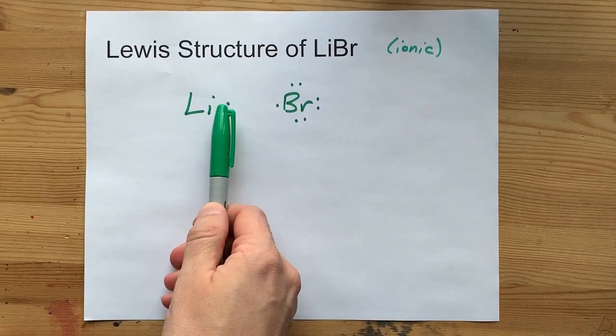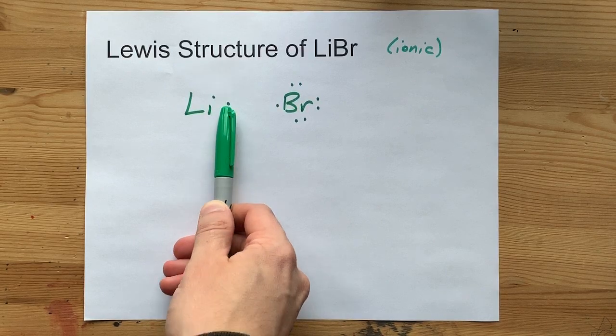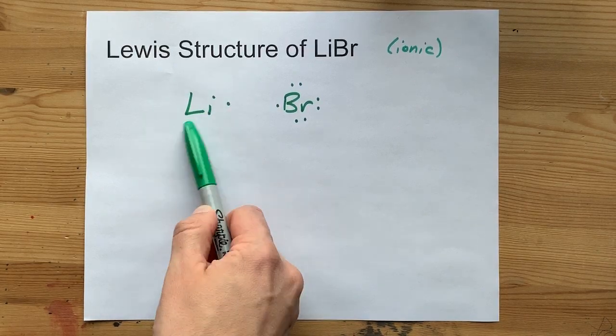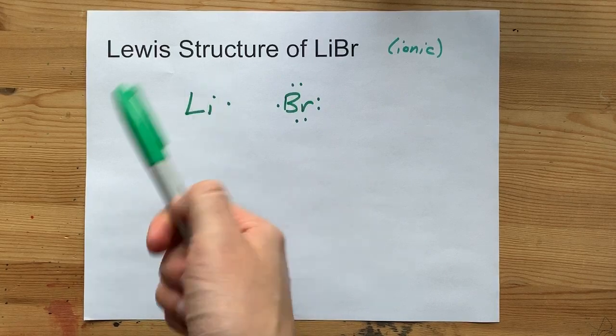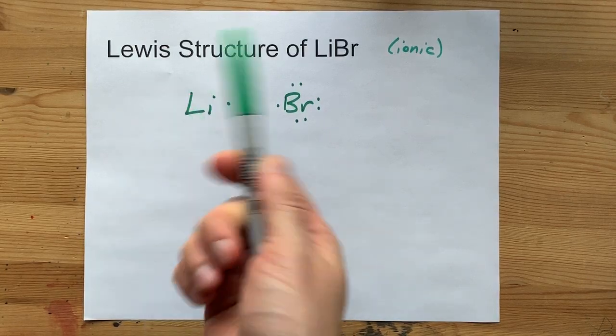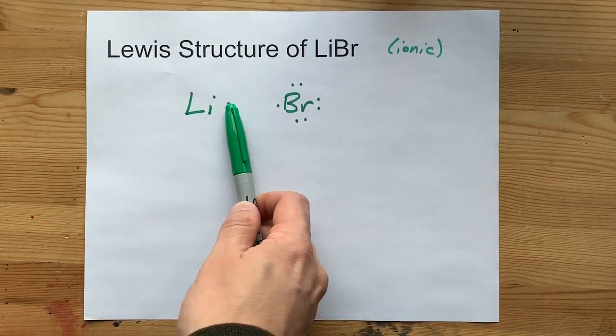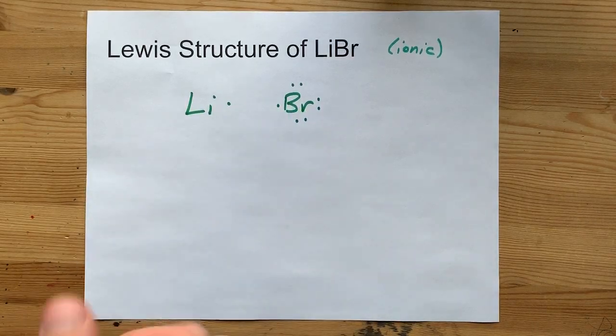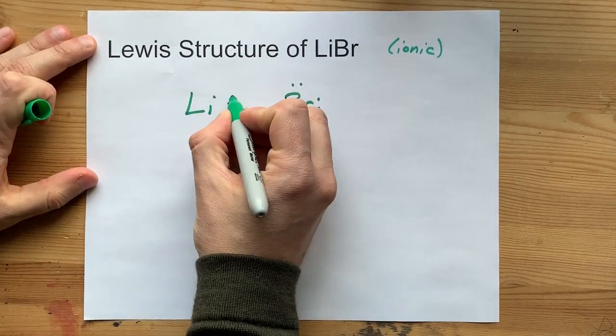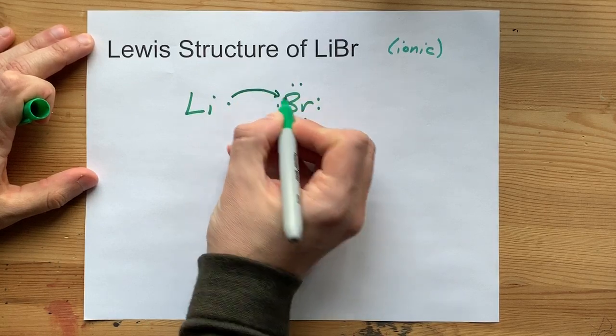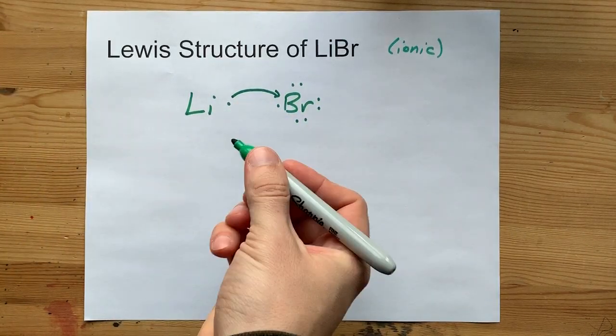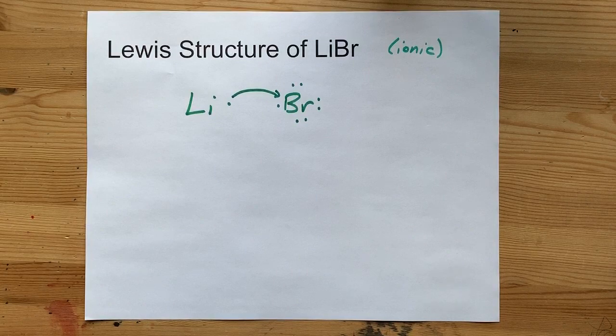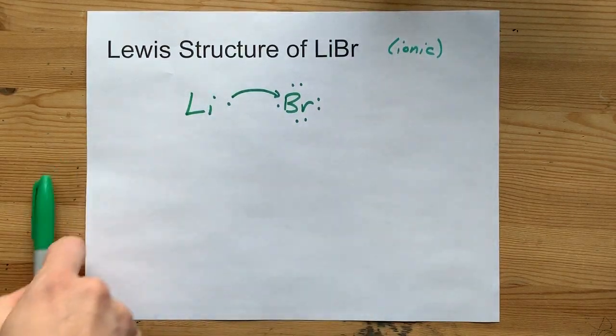And lithium wants to give away its one electron, because then its outer shell would be empty, and so the real outer shell would be the one below that, which is full. Anyways, lithium wants to give it away, and bromine wants to take it. So that electron is moved from the metal to the non-metal, and you're going to get two ions out of that. Get it? Ionic compound.